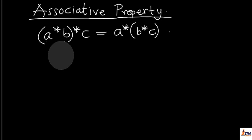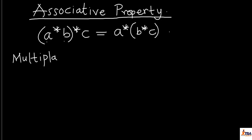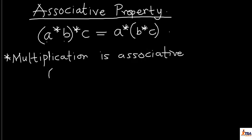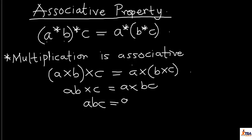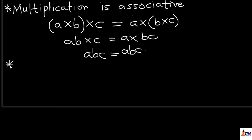In the associative property, we consider three elements — three objects or values — and deal with them based on their position and how they relate to each other. For multiplication, the associative property is applicable. Multiplication is associative because (a × b) × c gives the same value as a × (b × c), both yielding abc. Since they are equal, multiplication is associative.